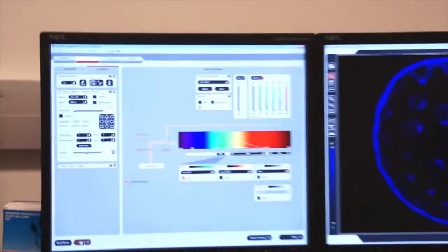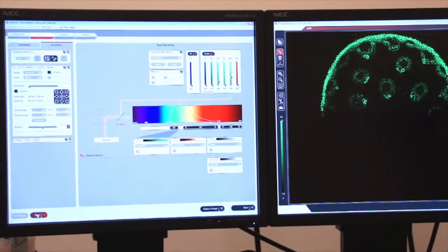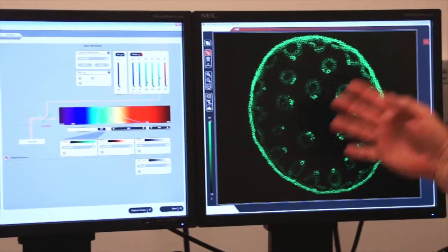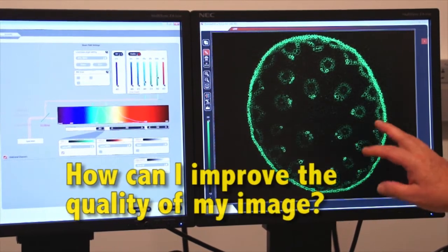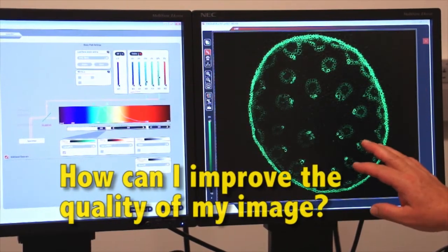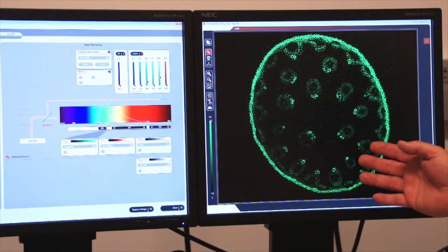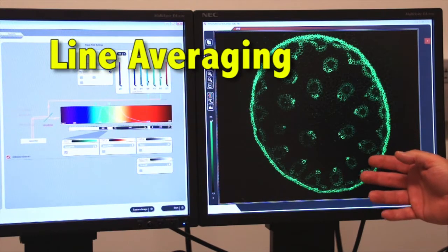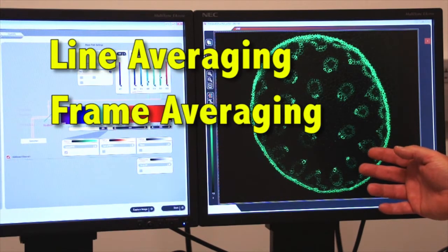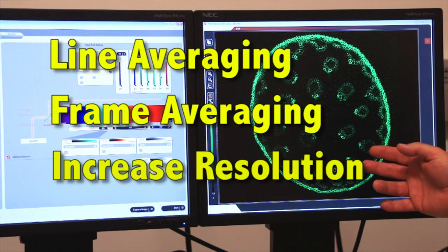Let's collect a live image on our screen, and as you can see, I have a fairly well illuminated image, but it's a little bit grainy. How can I improve the quality of my image? There are several ways to improve the quality of my image. One is to use line averaging, the other is to use frame averaging, and finally I can increase my resolution as well.